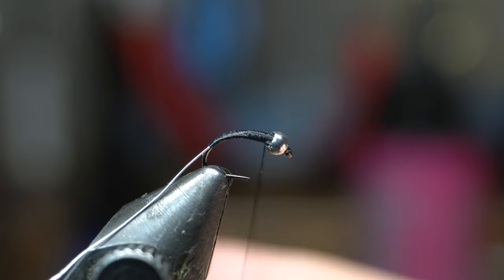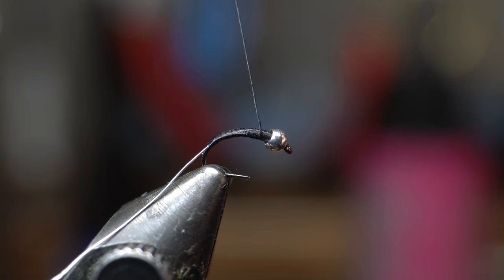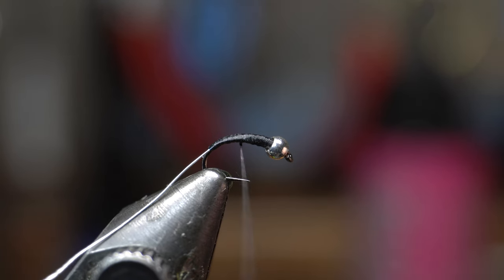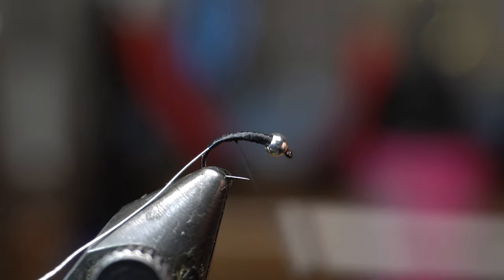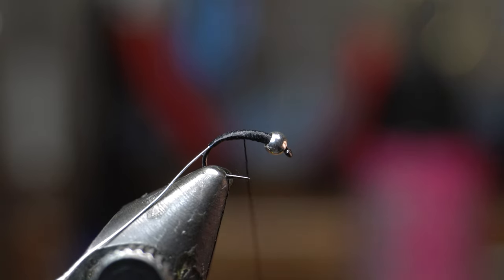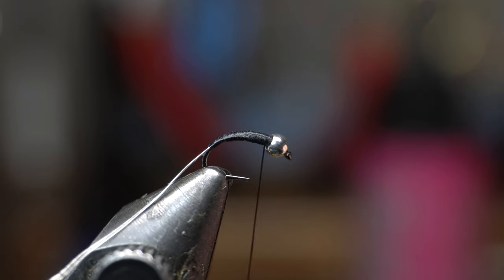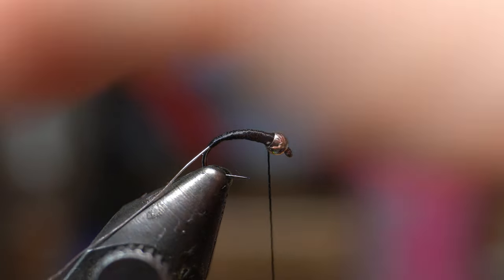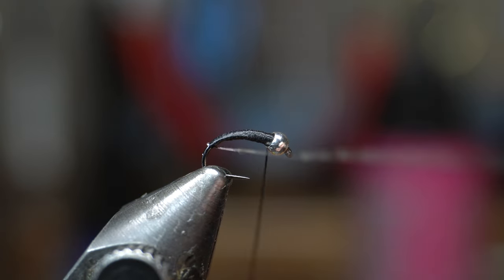I'm going to flatten out my thread once more, get a nice really smooth thread base here. Then we're going to come down once more about halfway and come back up. You just want these as smooth of wraps as possible—you don't want any bumps. We're going to make a couple wraps and you can see now that bead is not moving. Now we're just going to wrap our wire.